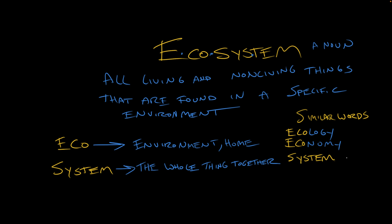And systematic — methodical, doing something efficiently, applying a system to how you do something. Let's say I'm systematic about making breakfast sandwiches. Maybe I'll bake a whole tray of eggs and cut them into squares and put them on the little buns. I got a system. I'm being systematic. And let's be systematic about teaching you the meaning of ecosystem by using it in a sentence or two.